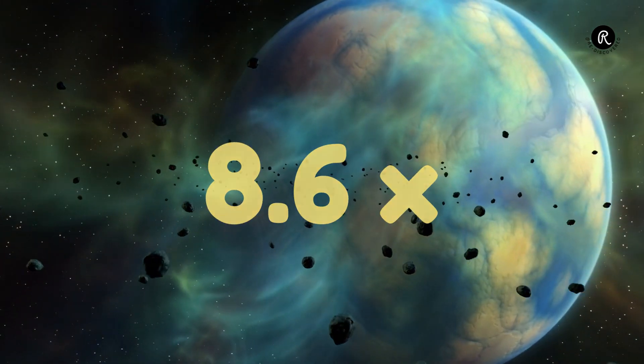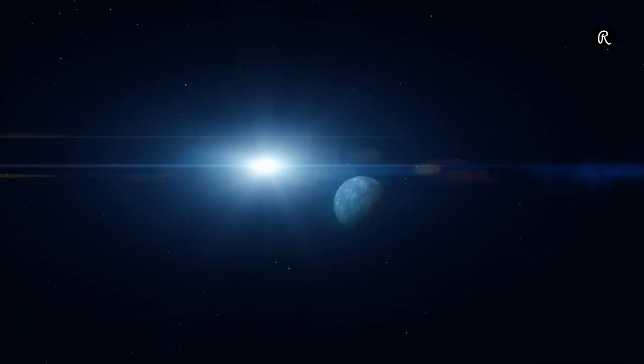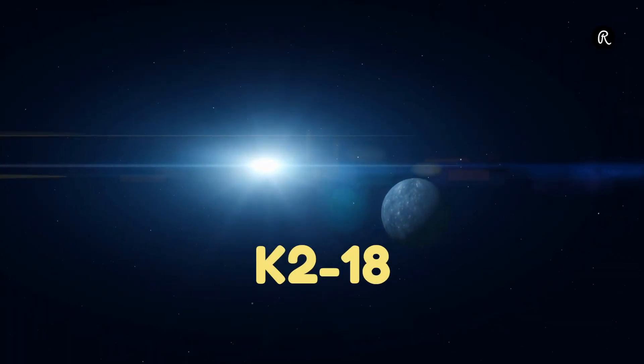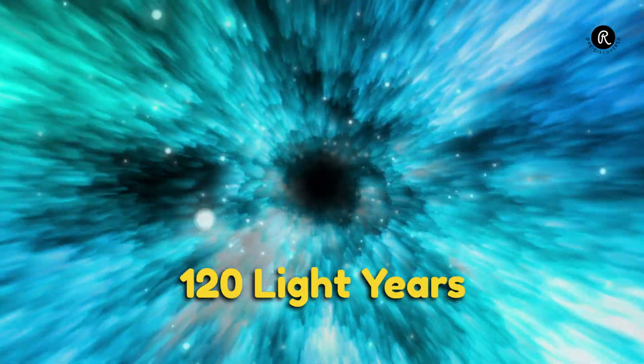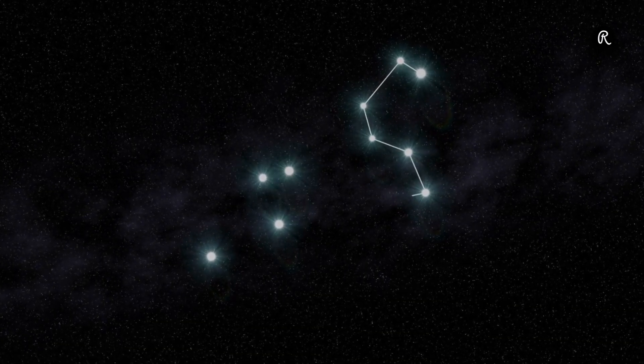8.6 times as massive as Earth, this exoplanet orbits the cool dwarf star K218 in the habitable zone. 120 light-years away from Earth, K218 b lies in the constellation Leo.